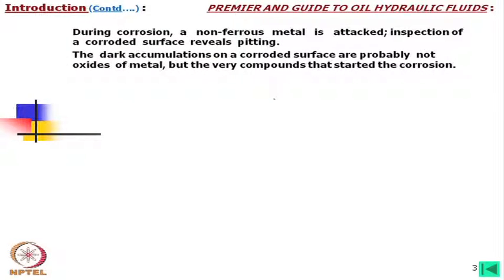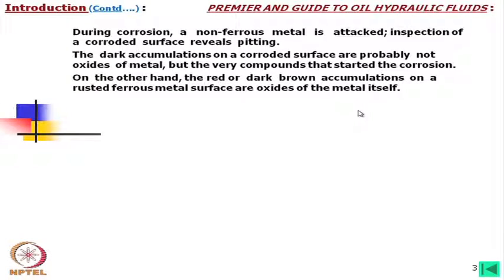The dark accumulation on a corroded surface is probably not oxidized metal but the very compounds that started the corrosion. On the pitted or corroded surface you may find some dark debris — we might think it is oxides of metals, but it is normally those compounds. On the other hand, the red or dark brown accumulations on a rusted ferrous metal surface are oxides of the metal itself.